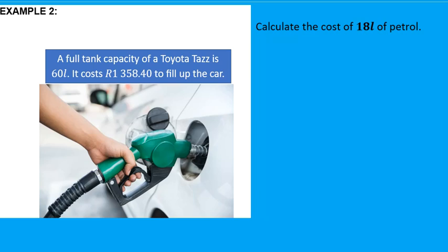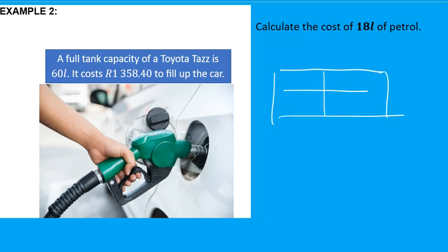The next example is not for ingredients, but we can also use the crisscross method for any complex conversions. A full tank capacity of a Toyota is 60 liters, and it costs R1358.40 to fill up the car. Let's put that into the table.